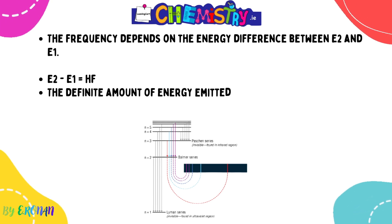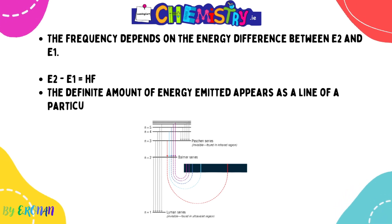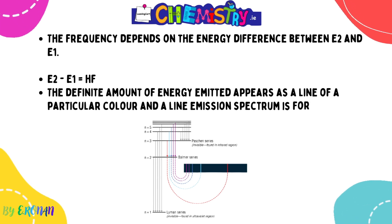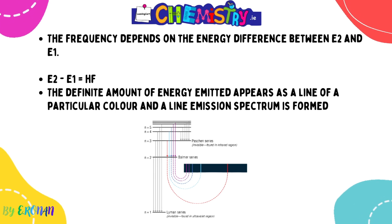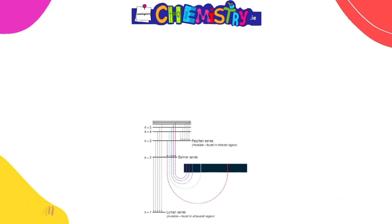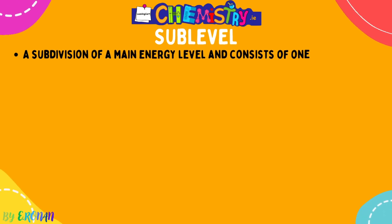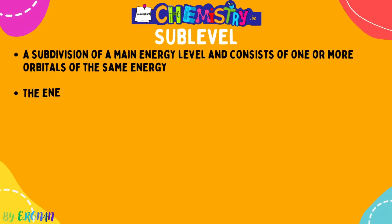The frequency depends on the energy difference between the higher energy level E2 and the lower energy level E1. Our equation is: E2 − E1 = hf, where E2 is the higher energy level, E1 is the lower energy level, h is Planck's constant, and f is the frequency of light. Remember: every element produces its own unique emission line spectrum and emits light of a definite frequency.